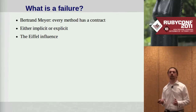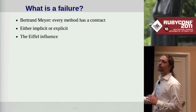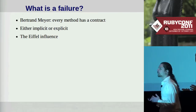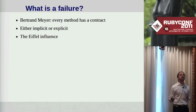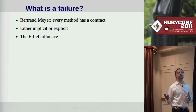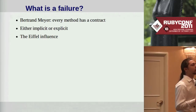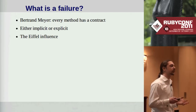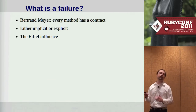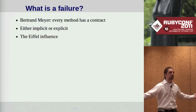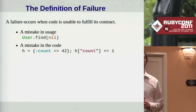One way to look at failure is from the design by contract view of programming. This is the view espoused by Bertrand Meyer. He encoded it into a programming language called Eiffel, and this is relevant to us because Ruby's exception system is in many ways influenced by Eiffel. In the design by contract view of software, every method has a contract — implicit or explicit — with its caller: you will give me certain inputs, I will give you certain outputs. Failure is when code is unable to fulfill that contract.